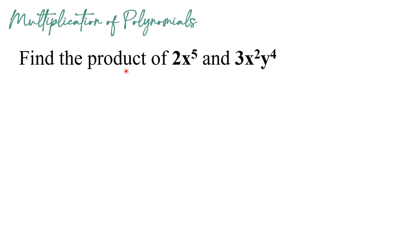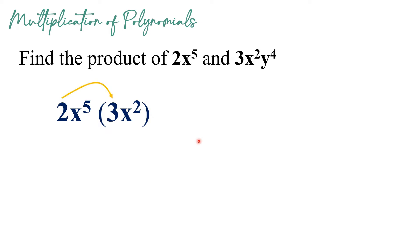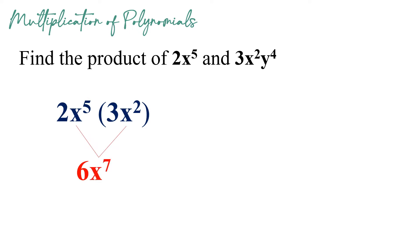First, find the product of 2x raised to 5 and 3x squared y raised to 4. To multiply this, let us start with the numerical coefficient 2 times 3, which will give us positive 6. Then proceed with the variable. Multiplying x raised to 5 and x squared — since they have the same base x, we just add their exponents: 5 plus 2 gives us 7. So we have x raised to 7, and our final answer is 6x raised to 7.